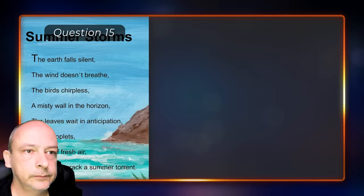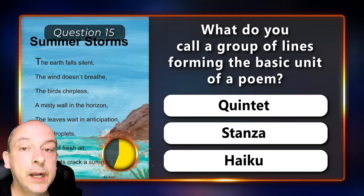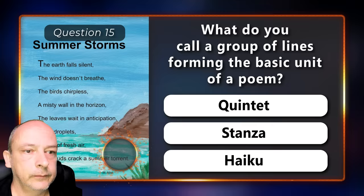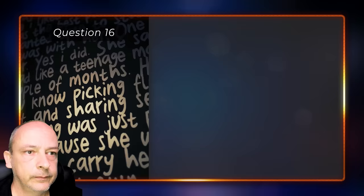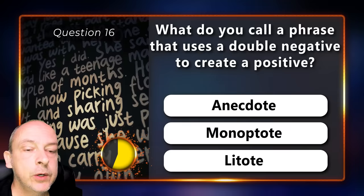What do you call a group of lines forming the basic unit of a poem? A quintet, a stanza, or a haiku? What do you call a phrase that uses a double negative to create a positive? An anecdote, a monoptote, or a litote?